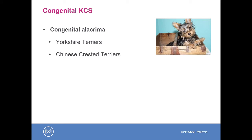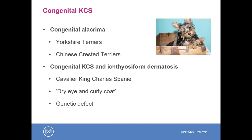Certain breeds can be born with an absence of lacrimal tissue — congenital alacrima. In the UK, the most commonly affected breeds are the Yorkshire Terrier and the Chinese Crested Terrier. We also see congenital dry eye in the Cavalier King Charles Spaniel, particularly in the United Kingdom. This is a syndrome associated with ichthyosiform dermatosis, a kind of dry, curly coat — giving rise to the term 'dry eye and curly coat syndrome', commonly used by Cavalier King Charles Spaniel breeders — and this is a genetic defect.